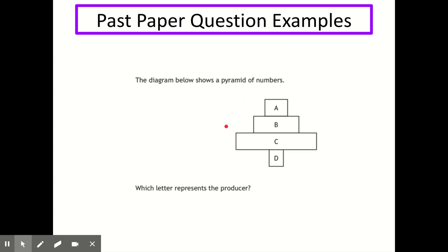Past paper question two shows a pyramid of numbers with blocks labelled A, B, C, and D, and asks which letter represents the producer. One of the key rules for pyramids is that producers are always at the bottom block, so the producer is D. If the question asked about the primary consumer it would be C, the secondary consumer would be B, and the tertiary consumer would be A — it always works from the bottom up.